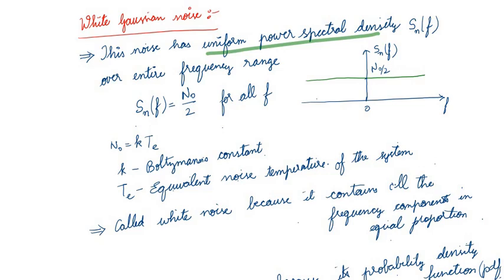So the power spectral density SN(f) for all f is n₀/2, where n₀ is K multiplied by Te. K is the Boltzmann constant, and Te is the equivalent noise temperature.